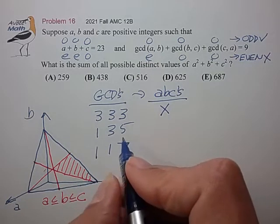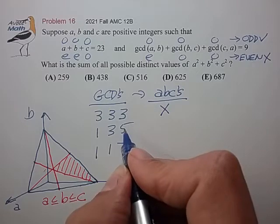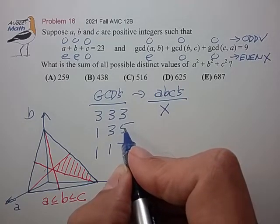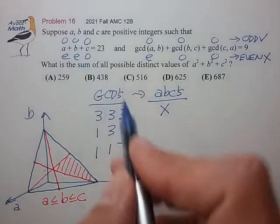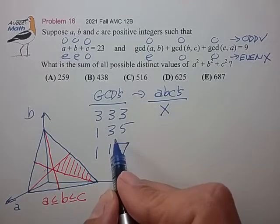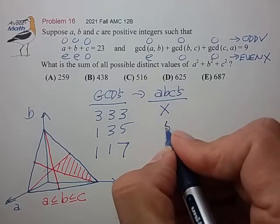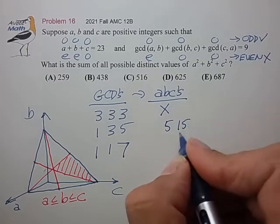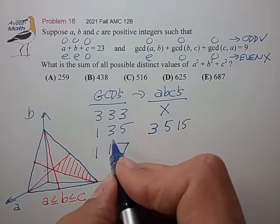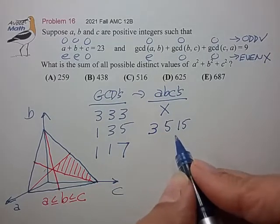1, 3, 5. For the GCD of 5, we could have numbers such as, say, 5 and 5. And then the balance number would be 13, but that doesn't create a GCD of 3. So we're going to need to have 5, 5, 15. And then the balance number would be 3 to give us the GCD of 3. So that's a valid pattern.